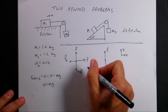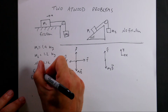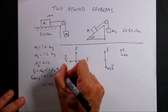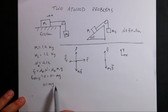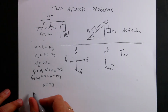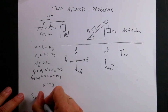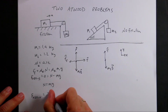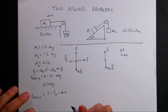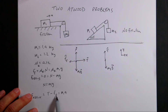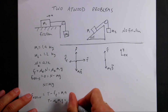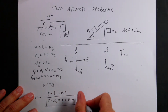The friction force equals mu_K times N, so that's mu_K times M1g. Now I can write the X-direction equation: F_net_X equals T minus the frictional force, and since I assumed it's accelerating in the positive X direction, that equals M1a. Plugging in for friction, I get T minus mu_K times M1g equals M1a. That's an important equation, but I have two unknowns — T and A — so I need another equation.